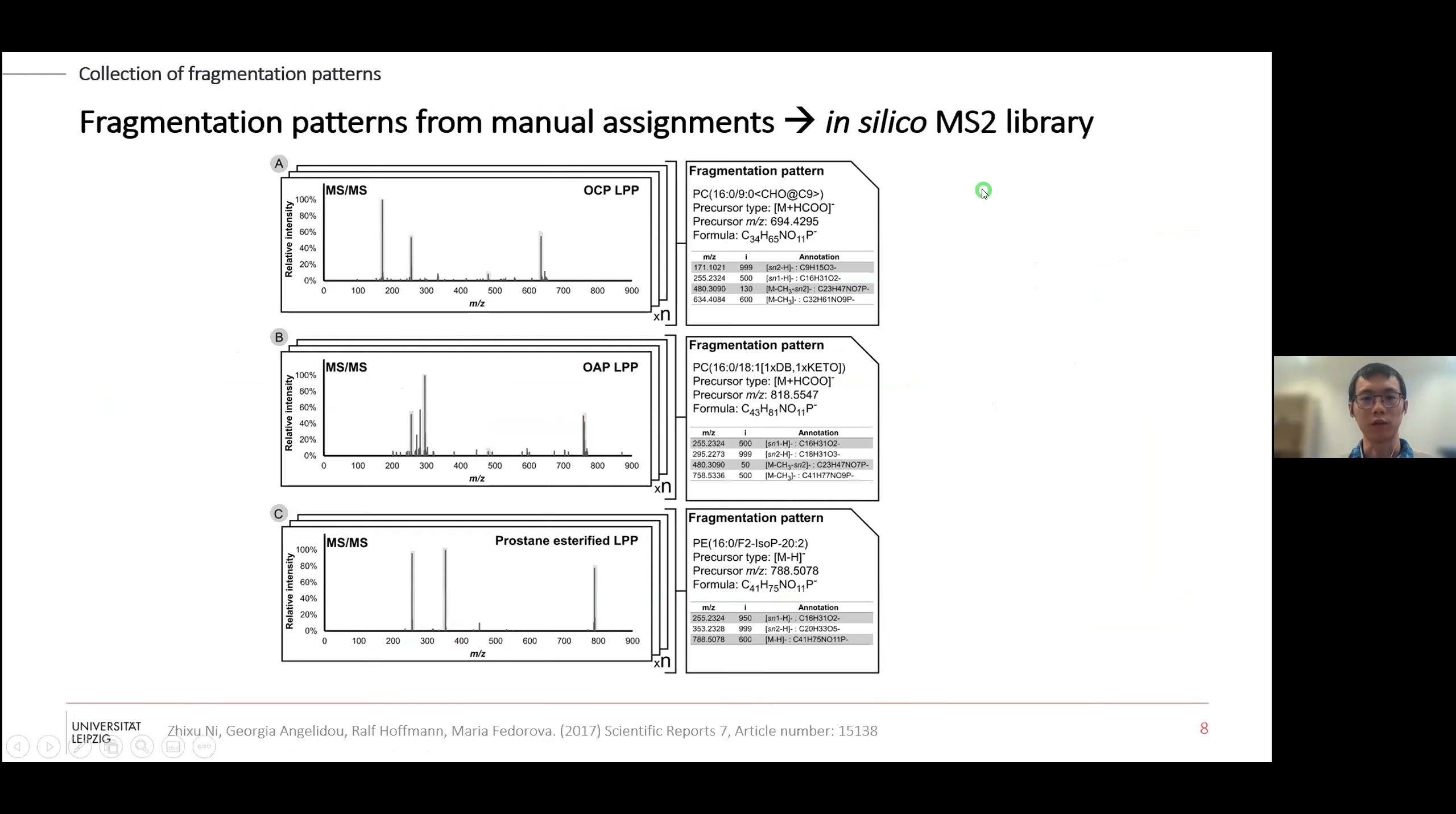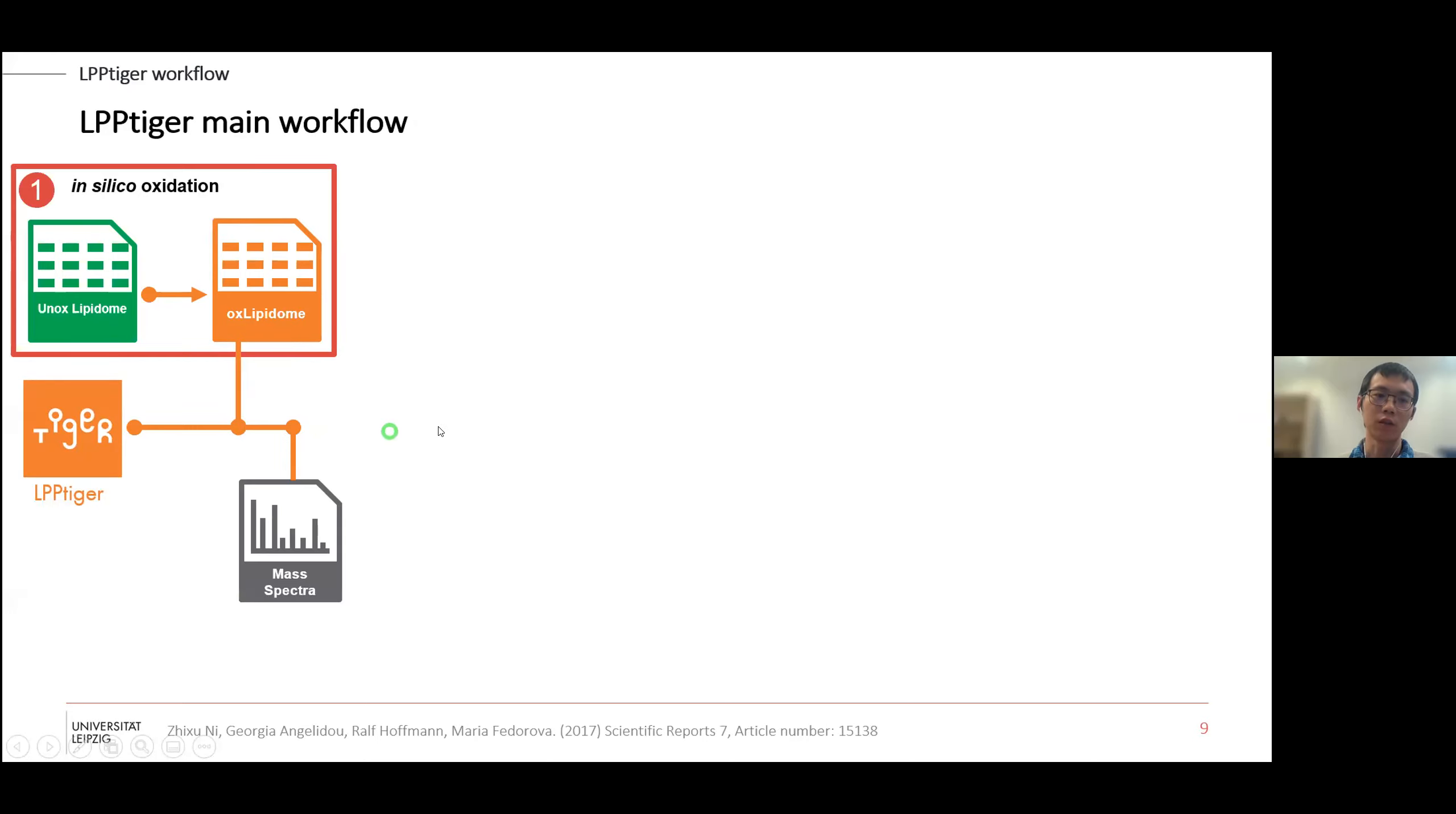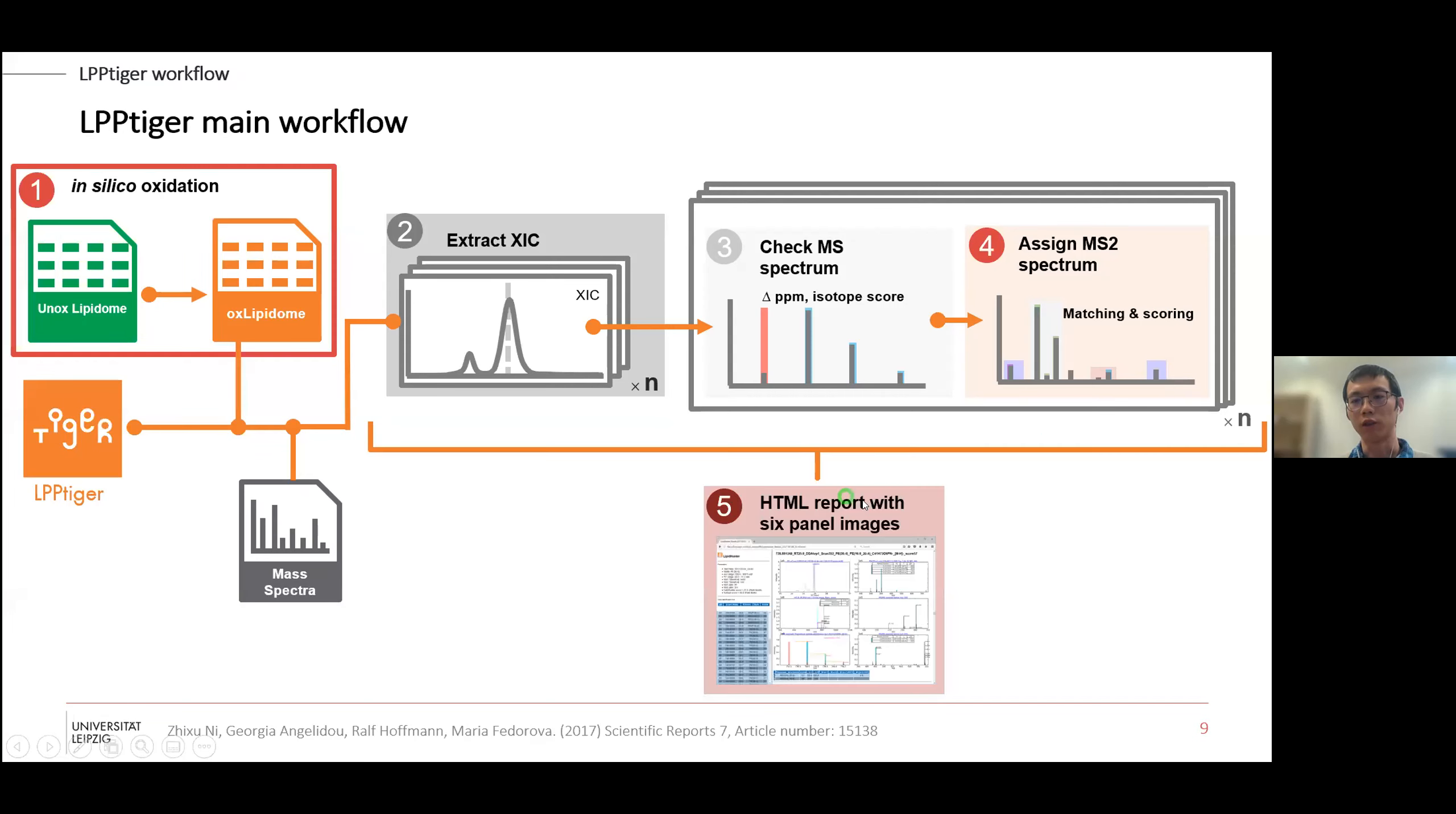We also manually assign lots of oxidized lipid spectra and collect these fragmentation patterns. That means we have the m/z intensity and we know what is that, then we collect this knowledge and perform in silico fragmentation, which was well explained by the previous talk also in MS-DIAL. We have the overall workflow: we have the unoxidized lipidome, you can get it from different software, you submit to LPP Tiger to generate this predicted oxidized lipid space. We take the spectra from your mass spec, first we'll get extracted ion chromatogram, then check the isotope patterns, then check the fragmentation patterns, and generate a report for you.